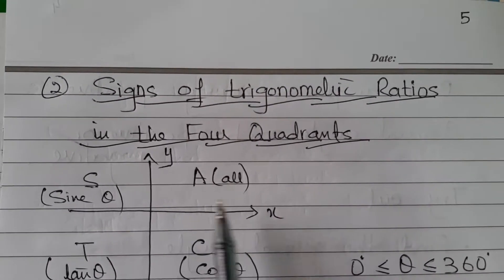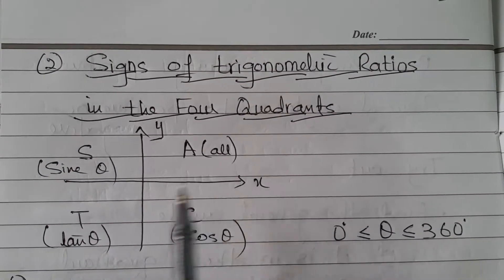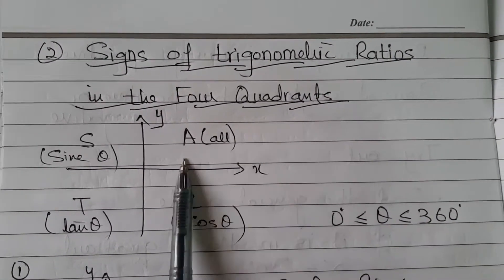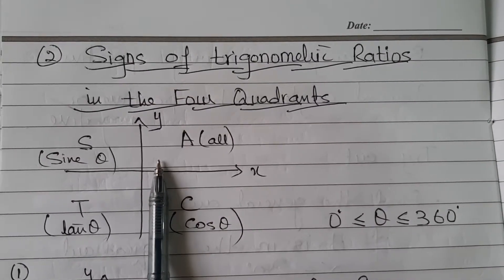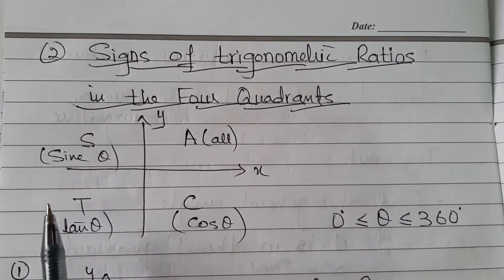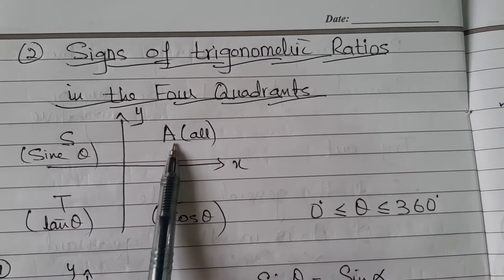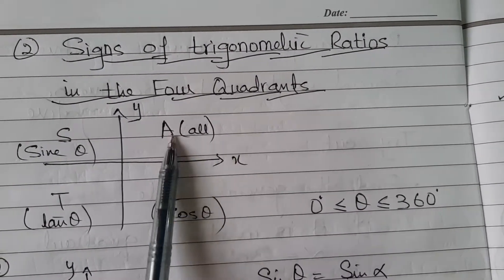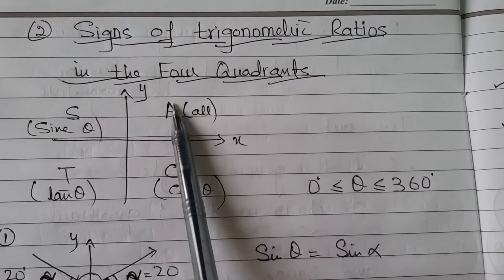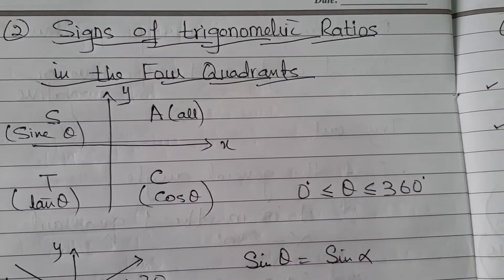Now we will see the importance of signs — plus or minus — in all four quadrants. The conclusion is summarized as A, S, T, C: first quadrant A, second quadrant S, third quadrant T, fourth quadrant C. This means all trigonometric functions — sine, cos, tan — if you take any angle between 0 to 90 degrees they will give you a positive answer. For example, sine 30, cos 40, tan 30 will all give a positive answer.